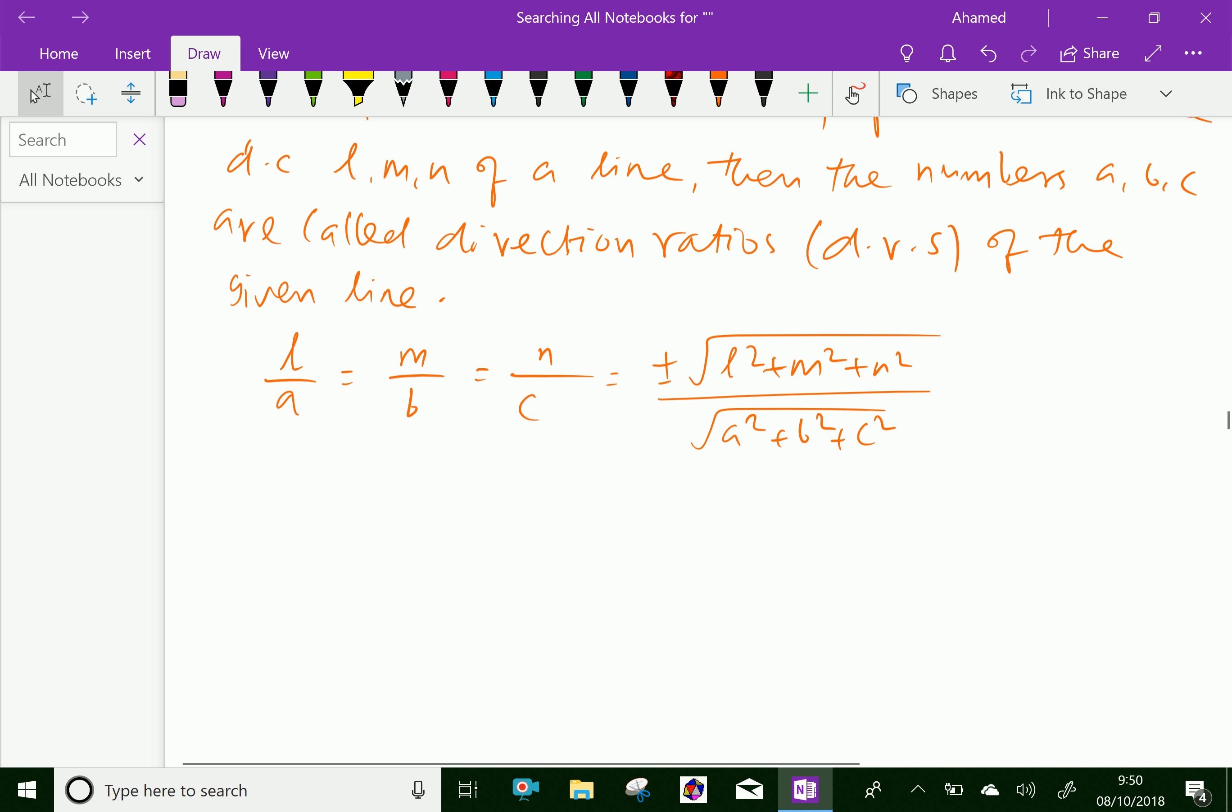By using the method of proportion, further which is equal, we know that square root of L square plus M square plus N square is square root of 1, therefore you can write